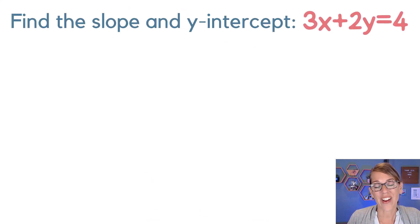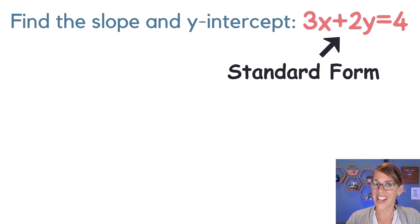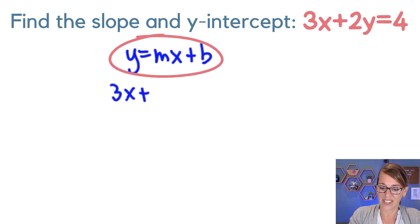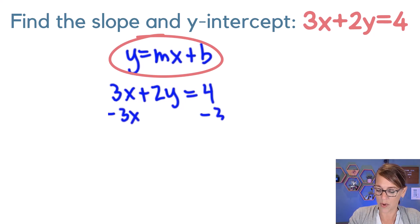In this next one we're asked to identify the slope and the y-intercept, but I'm given 3x plus 2y equals 4. This is standard form where I have my variable terms on one side and my constant on the other side. What I really want here is slope intercept form. So my goal is y equals mx plus b. I want to get rid of that 3x, so I'm going to subtract 3x from both sides.